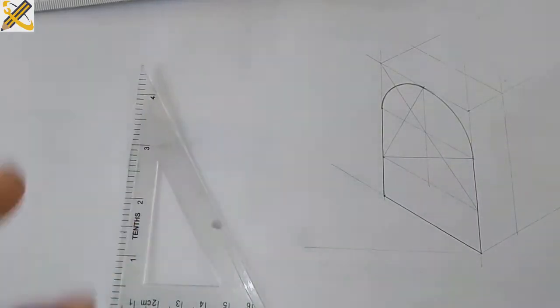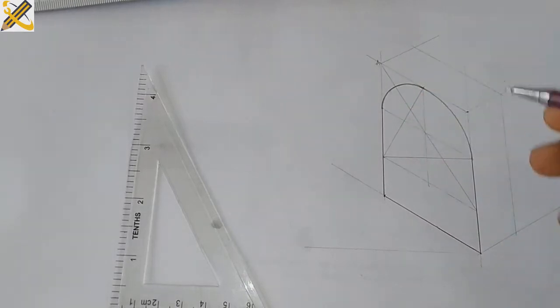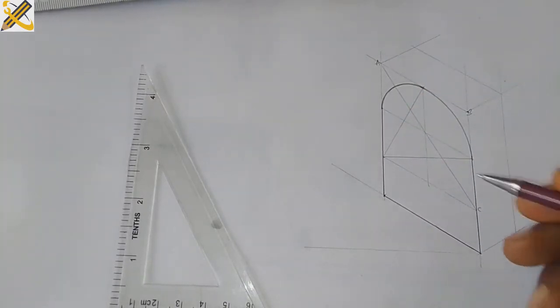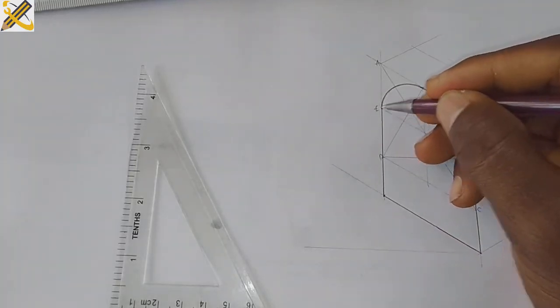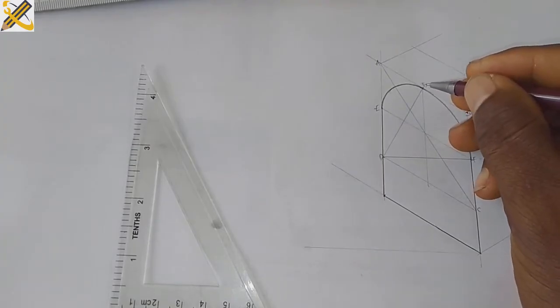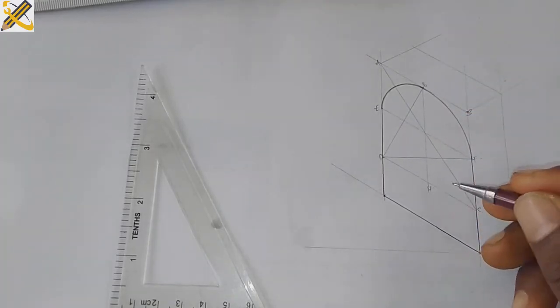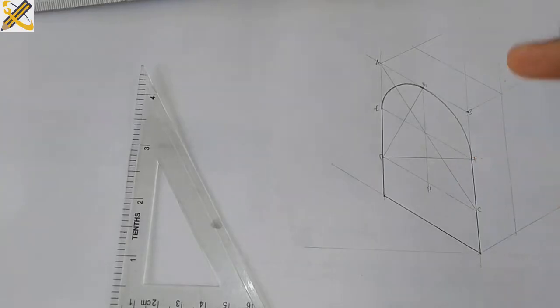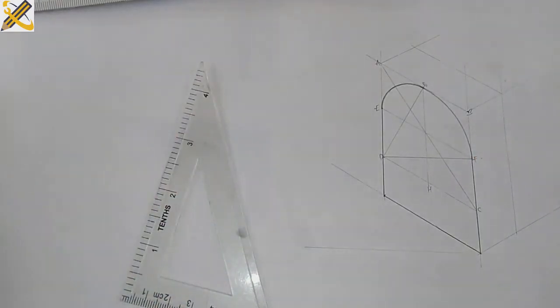To get the curve at the back now, so this same point A, point B, point C, and point D, then point E and point F, point G and point H. These same points here would be transferred to the back. Just take note of what I'm going to do now.